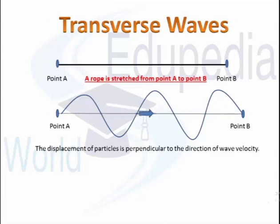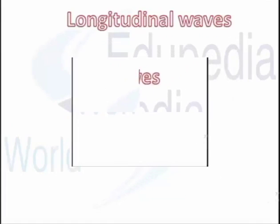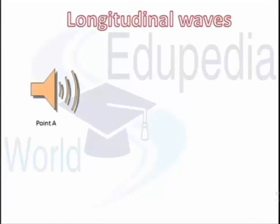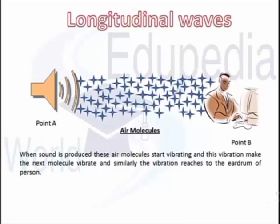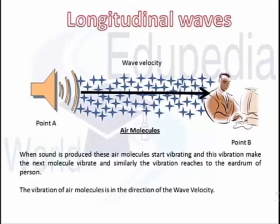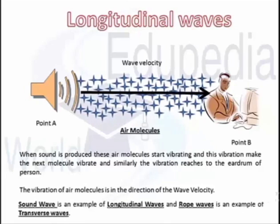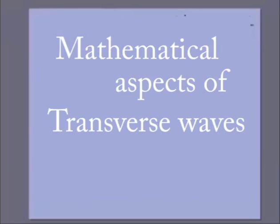An example of longitudinal waves is sound. When you make a sound, air molecules start vibrating; that vibration transfers to adjacent molecules and eventually reaches the listener's eardrum. In sound waves, the displacement of air particles is in the direction of wave motion, making sound a longitudinal wave. Rope waves are transverse; sound waves are longitudinal.